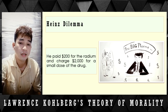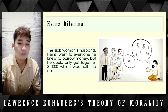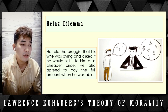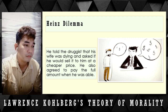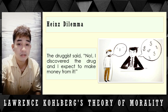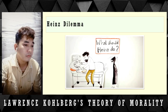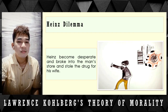Only wealthy people could afford it. Heinz could not afford the drug, so he went to everyone he knew to borrow money, but could only gather $1,000 — half the cost. He went back to the druggist, told him his wife was dying, and asked if he would sell it at a cheaper price. He even offered to pay the full amount later when he was able. The druggist said no: 'I discovered the drug and I expect to make money from it.' So in desperation, Heinz broke into the man's store and stole the drug for his wife.